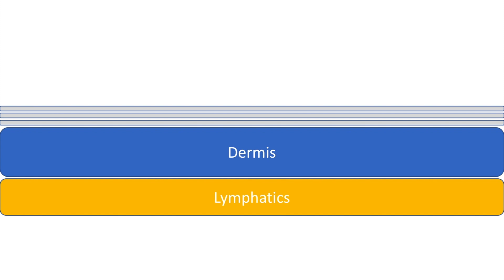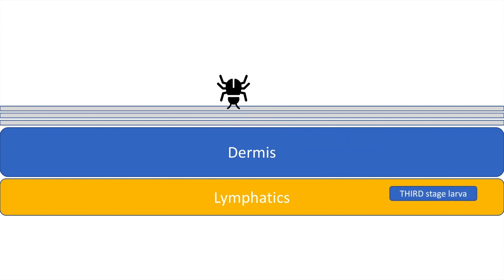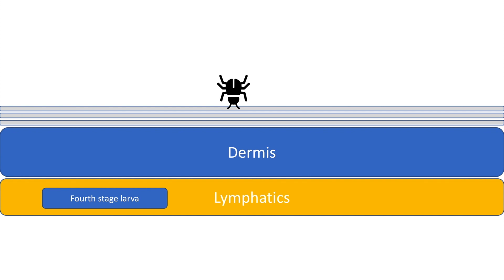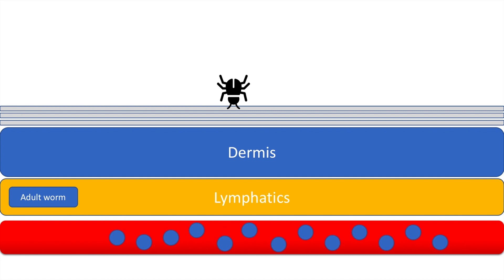The pathogenesis of filarial infection begins with the vector homing in on the human skin. Once on the human skin, the vector releases the third stage larva into the skin. This third stage larva now migrates to the dermal lymphatics and molts into the fourth stage larva. The fourth stage larva now becomes an adult. The adult female worm releases many microfilariae into the vasculature, and the microfilariae are the ones which are used for diagnosis, as we will see later.